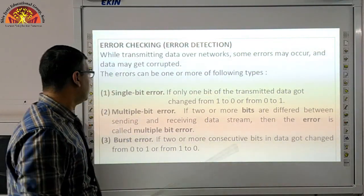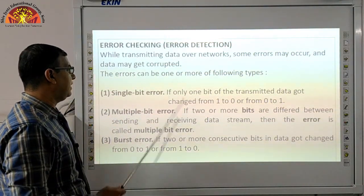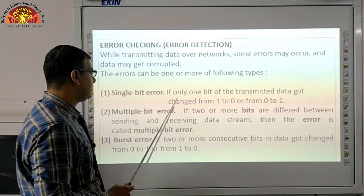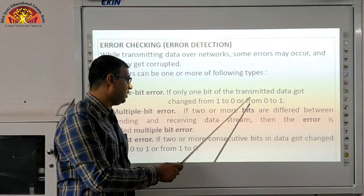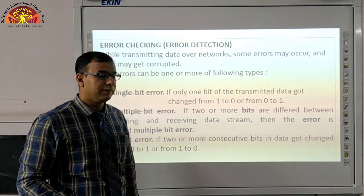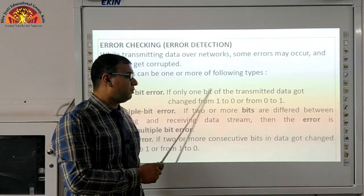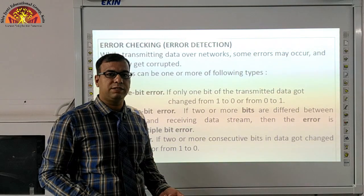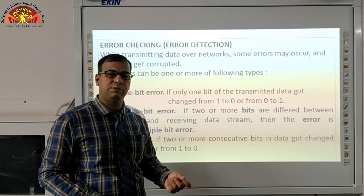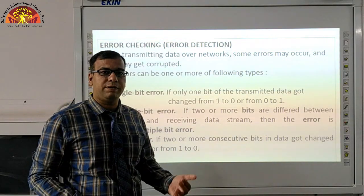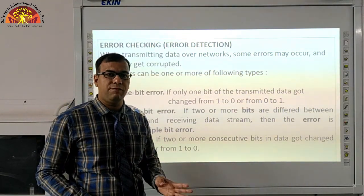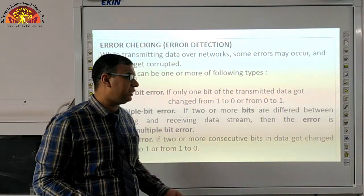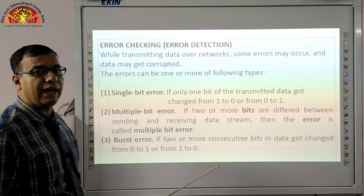There are different types of errors. First is single bit error: if only one bit of the transmitted data got changed from one to zero or zero to one. When we transfer any data, it is transferred in binary format — the smallest unit is called a bit. So all data transfers in 0101 binary format. If any 1 changed to 0 or 0 changed to 1, the error is called a single bit error.